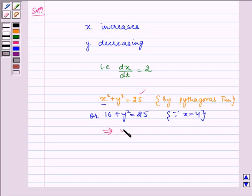This implies y² = 25 minus 16, which gives y² = 9, or y = 3, as length cannot be negative.